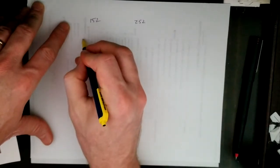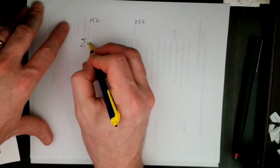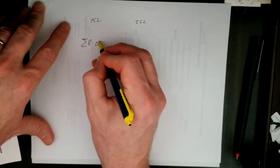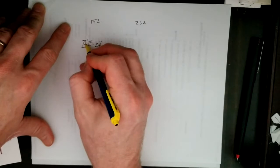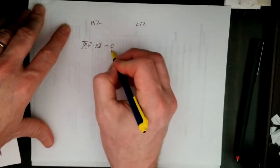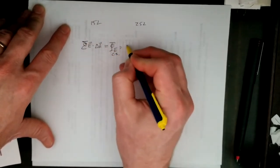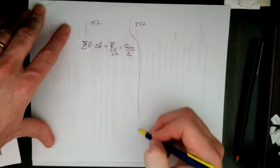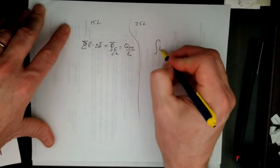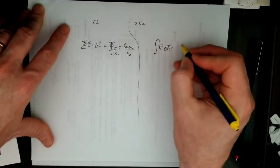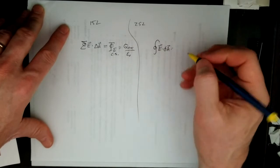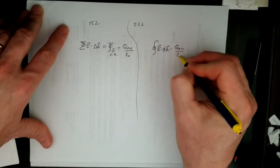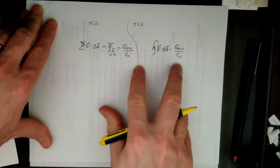We have the sum of the electric field times sort of these patches of area around a closed surface. In other words, the electric flux through a closed surface is equal to q enclosed over epsilon naught. Or the integral of e dot dA around a closed surface is equal to the enclosed charge over epsilon naught. That is Gauss's law of electricity.